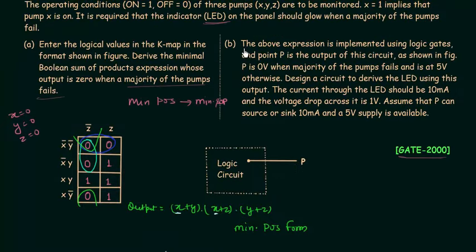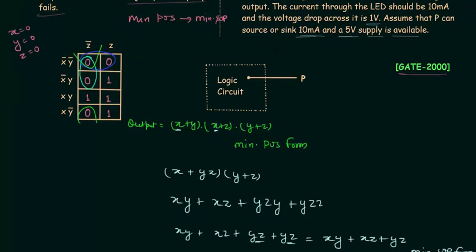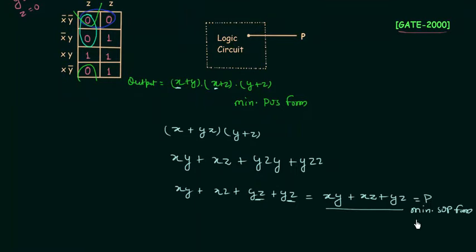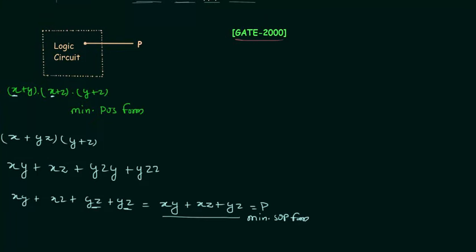For Part B, the expression is implemented using logic gates and point P is the output of the circuit. P is zero volts when a majority of the pumps fail and five volts otherwise. So P = xy + xz + yz, and to implement this we need three AND gates and one three-input OR gate.